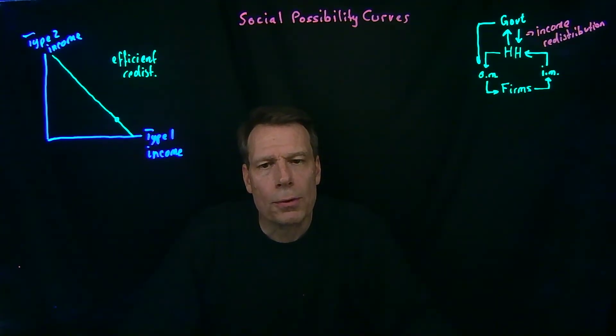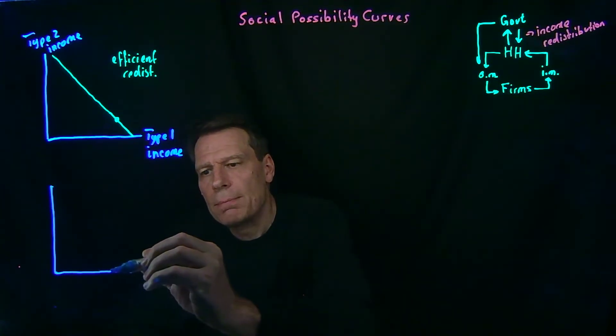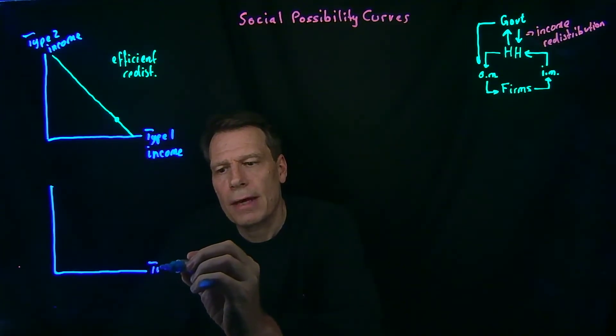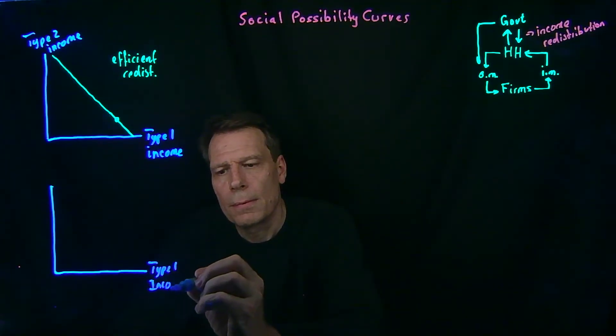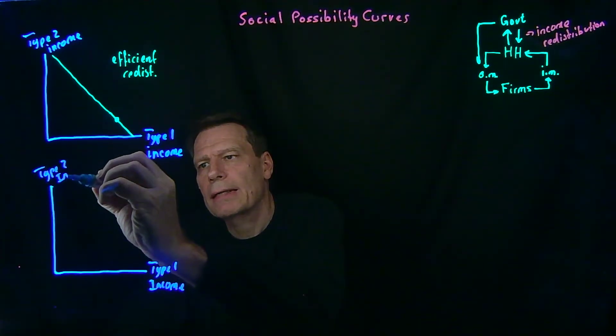But we know that in the real world, the tools that we use to redistribute are distortionary taxes and subsidies. And distortionary taxes and subsidies give rise to deadweight loss. They're inefficient forms of redistributing. So if we redraw this, we can now ask, what would that imply for the shape of the social possibility curve? We'll have type 1 income on the horizontal axis, type 2 income on the vertical axis.